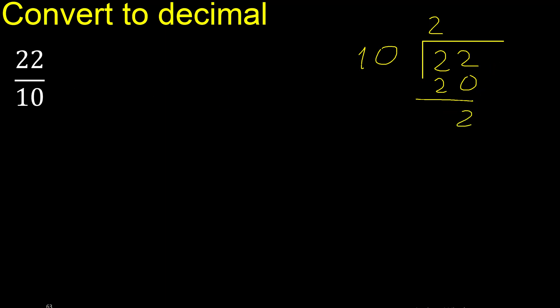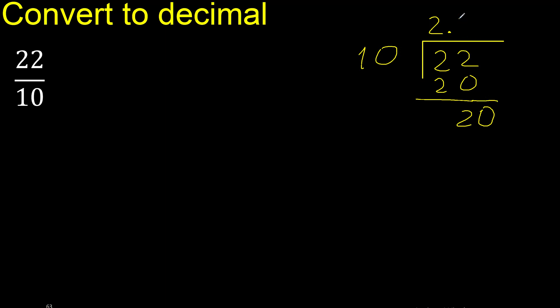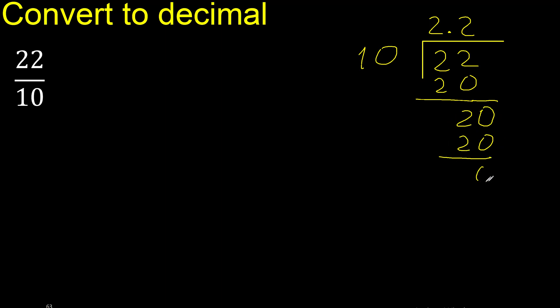There is no number that goes down, therefore complete — always complete with 0, here with a point. 20. Then multiply by which number is nearest to 20 but not greater? Multiply by 2 is 20, subtract, remainder is 0.